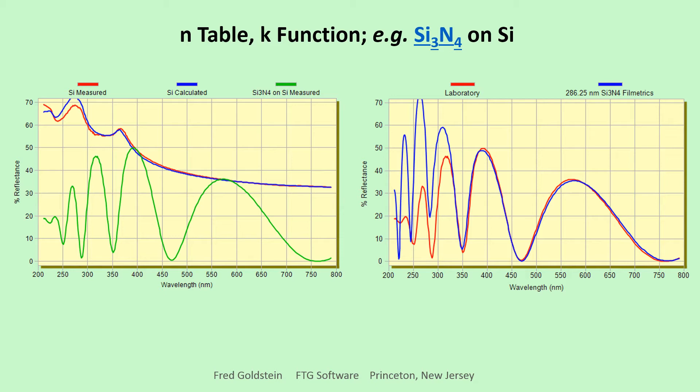In general, one needs reflection and transmission values to deduce N and K. In any case, the first step is to plot data and think about it. Think before computing.